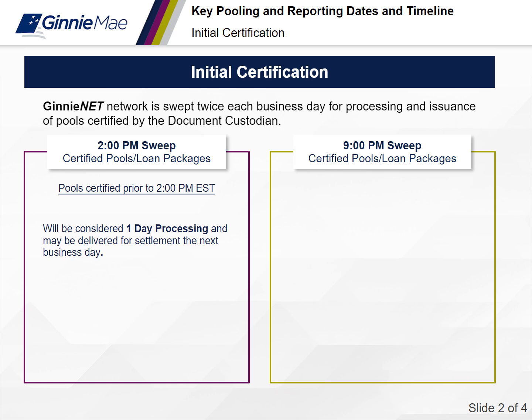Processing means that pool comes out on our system and goes through another set of checks to make sure everything is okay. It checks for your commitment and confirms that the pool number belongs to you. If there's any discrepancy, we'll reach out. If your commitment authority is an issue, we'll reach out to your AE, and they'll do their due diligence to get those commitments in so your pool can be issued.